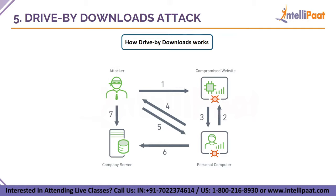The user views the page, triggering the malicious element. The element exploits a vulnerability in the user's software stack — this could be the browser, browser plugins, or the operating system. The third step is download — the malicious file is silently downloaded to the computer. In this example, the payload is a trojan horse, though attackers may use other payloads such as viruses or worms. The fourth step is execution — the trojan horse executes, opening a shell the attacker can use to gain control over the device.